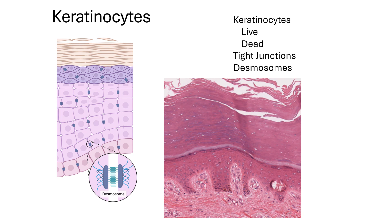Keratinocytes are the most abundant cells in the epidermis, but there are other cells. Because keratinocytes are the most abundant, many of their qualities are also shared by characteristics of the epidermis in general. As you can tell by their name, keratinocytes are full of the protein keratin, which is a waterproofing protein.